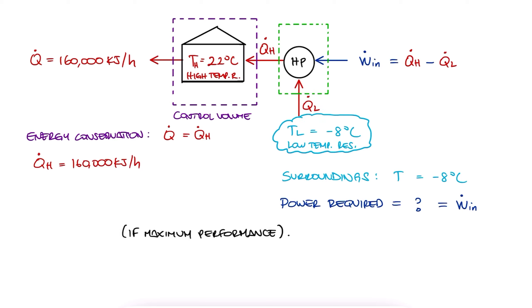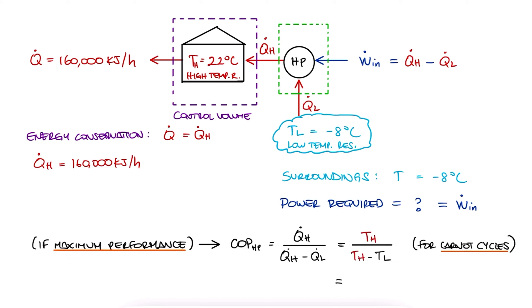The maximum coefficient of performance for this heat pump is when we substitute the heat variables QH over QH minus QL with the temperatures, like it was explained in the main video. We substitute the temperature values in Kelvin, like explained in the lecture video.